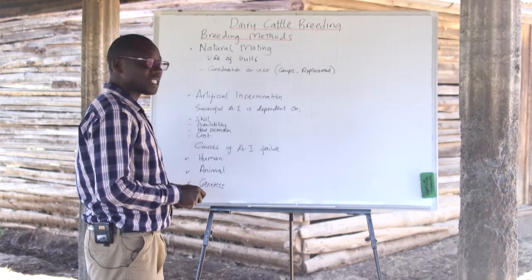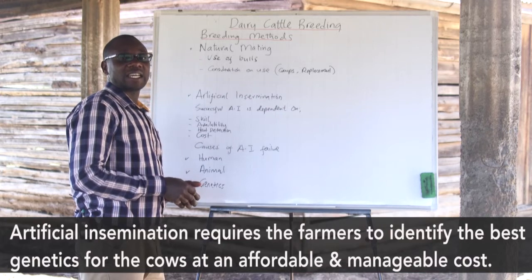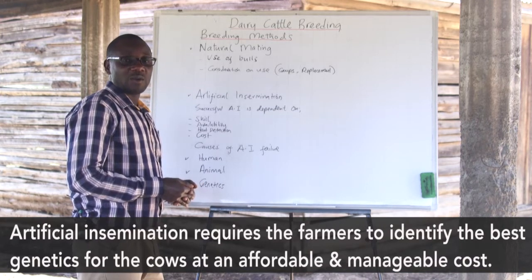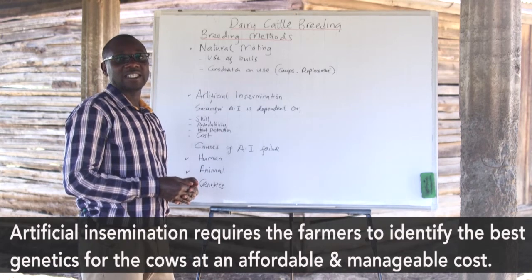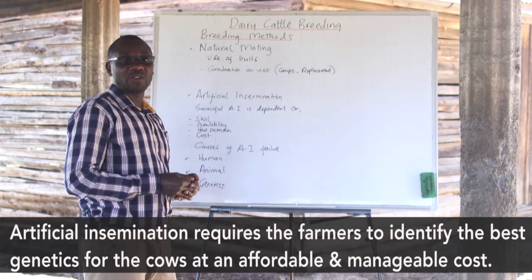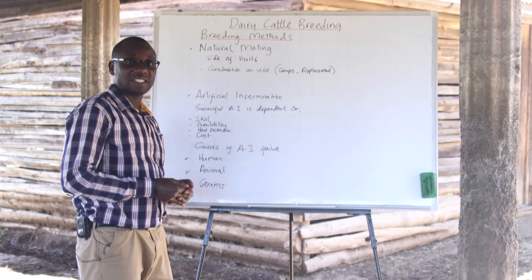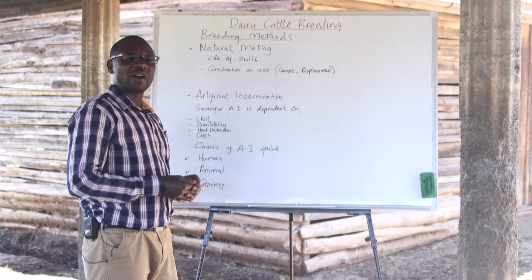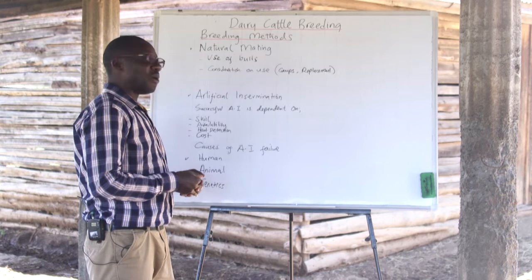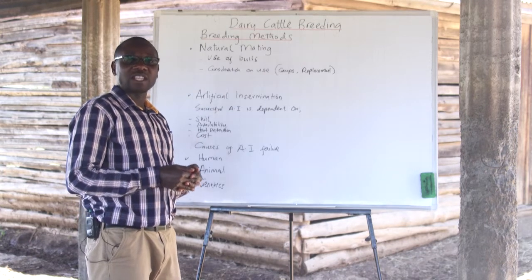One other consideration is the cost of insemination. Farmers ought to identify the best genetics at an affordable cost and know how to access genetics in a cheaper, affordable way. It has been a challenge for many smallholder farmers who shy away from AI because of the costs involved. A farmer has to be very keen and consider all requirements before calling an AI practitioner to serve their animals.